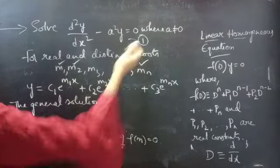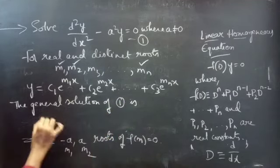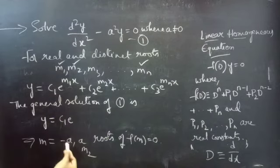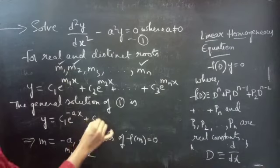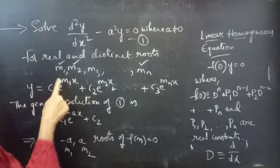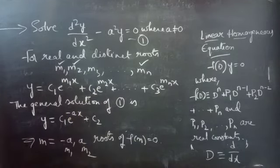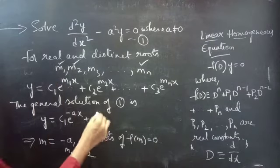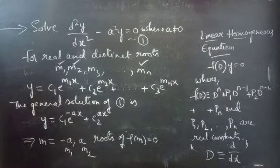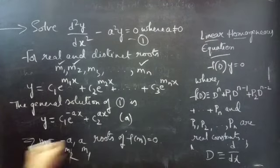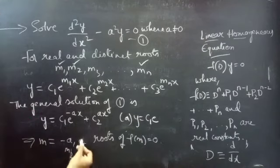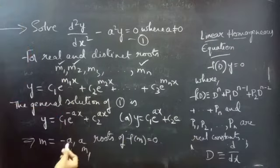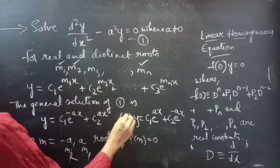Applying the formula with our two roots, the general solution is y = c₁e^(ax) + c₂e^(−ax). Alternatively, taking +a as m₁ and −a as m₂, you get y = c₁e^(ax) + c₂e^(−ax). You can write either form; both are equivalent general solutions.